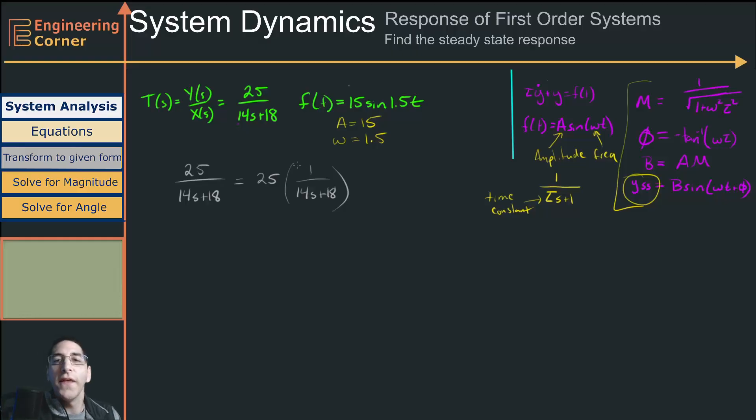If that was the only thing I needed to do and the rest was an s plus 1, I wouldn't have even needed to factor out the 25. But I like to factor out the 25 just so I can get this exactly in this form. So the next thing I want to do is divide out this 18. When I divide out this 18, I have 25 over 18 times 1 over 14 over 18 s plus 1. And now we are exactly in this form that we see.